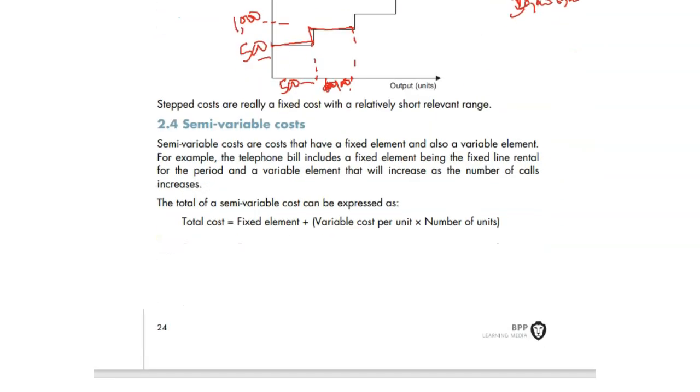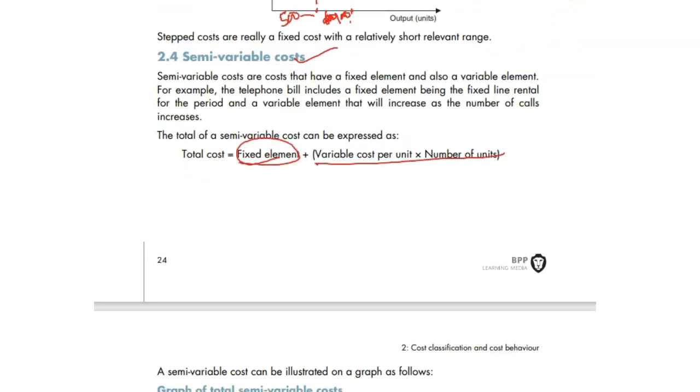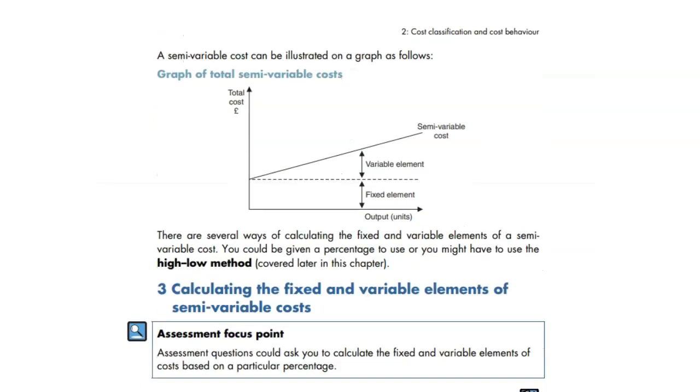The next one is about semi-variable, where there will be some fixed element and there will be some variable element. A very good example - look at this picture first. This is your fixed element, FC. Some of the items is fixed, let's assume 25 pounds. And the rest of the items is variable. This is your variable cost, but it starts from here.